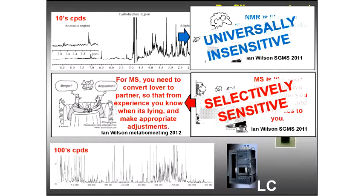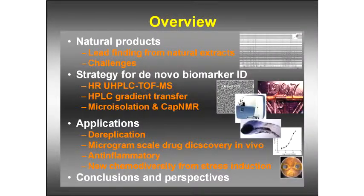Natural products are very interesting as entities, but you need them in pure form. The problem is that when dealing with crude plant or microorganism extracts, you get these products mixed in very complex mixtures. In our group, we develop strategies to isolate these compounds efficiently and also metabolomics and metabolite profiling approaches to characterize or use the mixture as a whole.